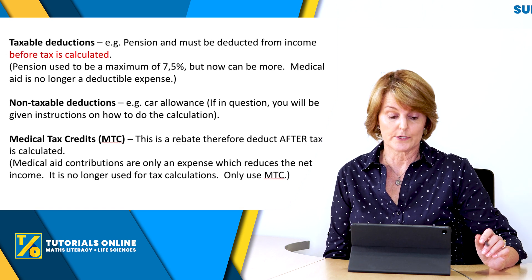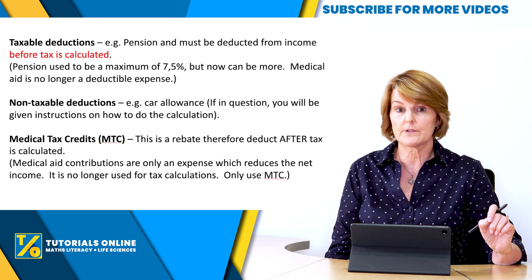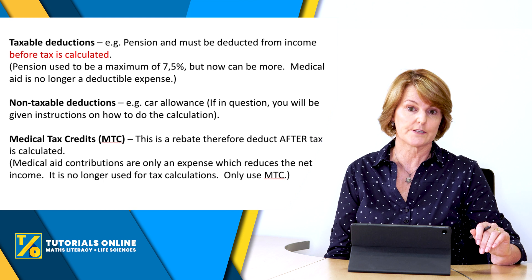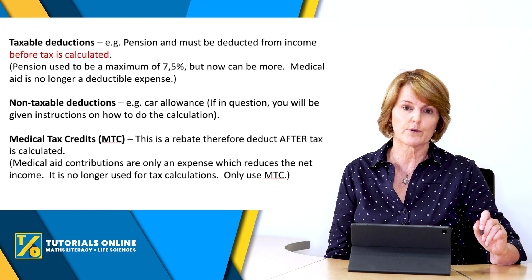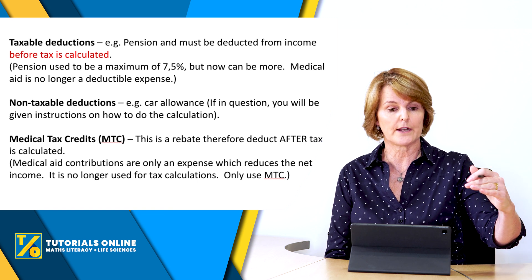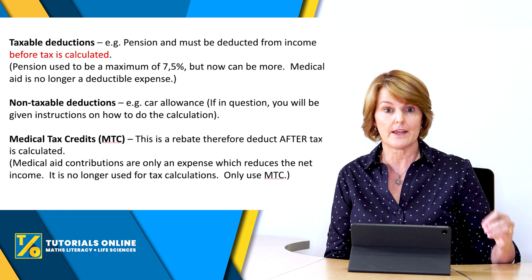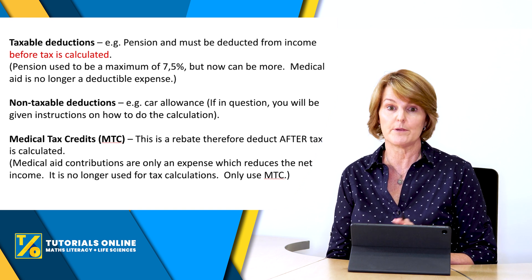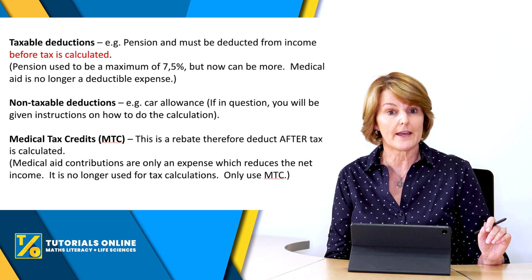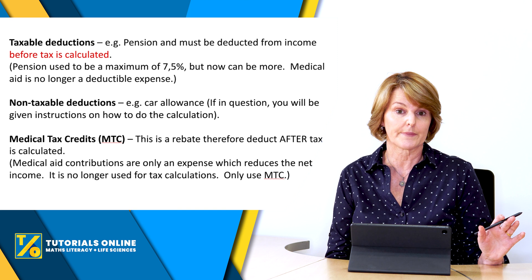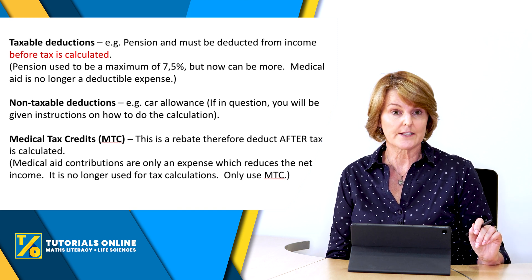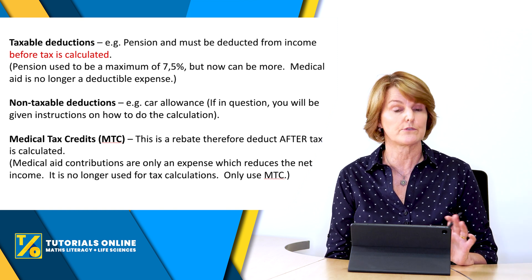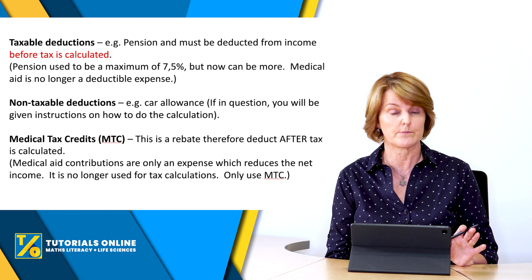This is the last and quite an important slide: taxable deductions. An example of a taxable deduction is pension — it must be deducted from income before tax is calculated. That's very important: you work out your annual salary, then you subtract the pension, and only then do you use the tax table. Note that pension used to be a maximum of 7.5% but can now be more, and medical aid is no longer a deductible expense.